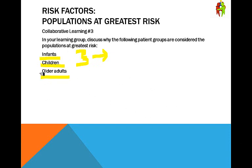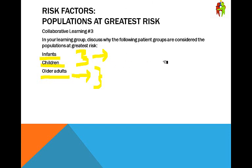Older adults are more at risk because they've lived a life where they may have damaged their heart or their lungs — either from sheer age, as physiologically these things stop working quite as well as you get older, or if they smoked, drank, worked in a factory, or were exposed to asbestos — anything that would affect their lungs or heart puts them at greater risk for developing altered gas exchange.